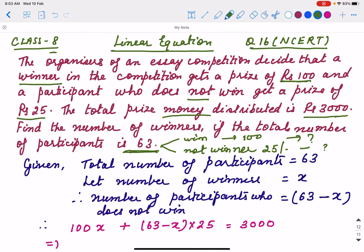So total number of participants is 63. We suppose that number of winners is X. If I say that 63 are total and out of that X are winners, the remaining are not the winners. So it is 63 minus X. Now, winners will get a prize of Rs. 100. That means, if there is X winners, we don't know how many. If one winner, then Rs. 100. If it is 2, then Rs. 100 into 2. So same way, if X winners, then Rs. 100 into X.